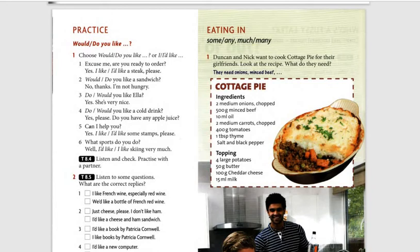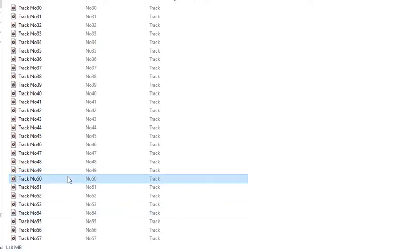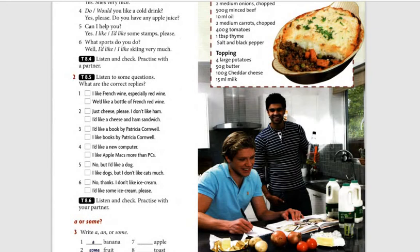In exercise number two, tape script 8.5, listen to some questions and choose the correct replies. Tape script 8.5: One: 'What kind of wine do you like?' Two: 'Would you like a cheese and ham sandwich?' Three: 'Who's your favorite author?' Four: 'What do you want for your birthday?' Five: 'Do you have any pets?' Six: 'Do you want some ice cream for dessert?'